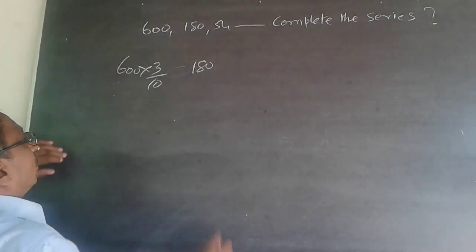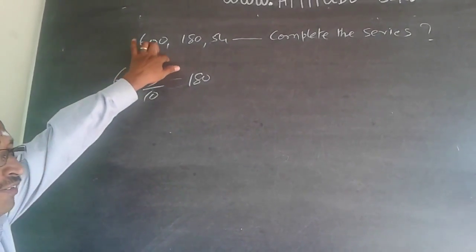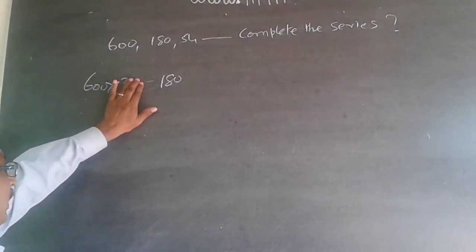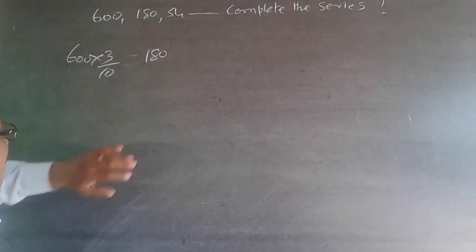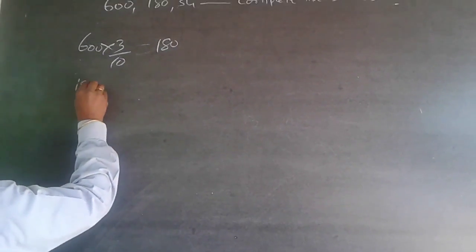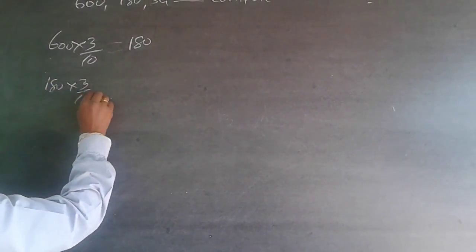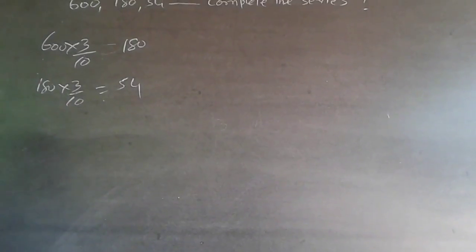Now you have found out a pattern, check whether the same thing is happening here. So 180 × 3 ÷ 10 will be 54. Then obviously the answer has to be 54 × 3 ÷ 10.